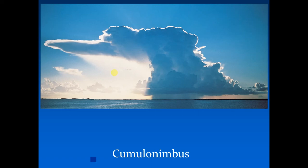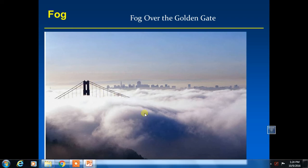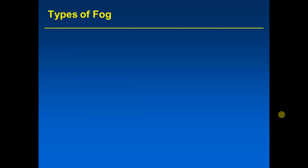Fog is a cloud on the ground, but it's not quite that simple because there are multiple types of fog that form in different ways. This picture shows San Francisco covered in fog — here's the Transamerica Pyramid, the Bank of America building, the Golden Gate Bridge, and that layer of fog over the city. It's very common to have fog in the summertime over San Francisco. There are five major types of fog.